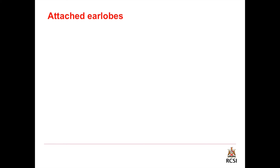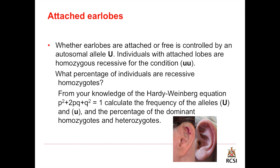The second example is attached ear lobes. Whether ear lobes are attached or free is controlled by an autosomal allele referred to as U. Individuals with attached ear lobes are homozygous recessive for the condition and we refer to them as double small u. What percentage of the individuals are recessive homozygous?